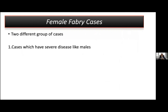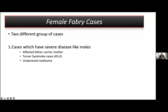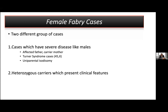There are two groups of female Fabry cases. In the first group, we have cases with severe disease like males. The reasons include an affected father — if an affected father marries a carrier mother, we may have homozygous female cases. In Turner syndrome cases, they have only one X chromosome, and if there is a mutation on the GLA gene on this single X chromosome, she will have severe Fabry disease. Uniparental isodisomy, where both X chromosomes come from a single parent, is another reason. But these reasons are only responsible for 5% of all female Fabry cases.